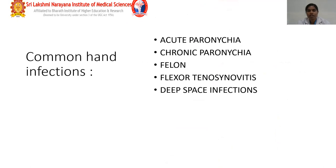Common hand infections include acute paronychia, chronic paronychia, felon, flexor tenosynovitis, and deep space infections. Deep space infections include palmar space infection, space of Parona infection, and hypothenar and thenar space infections.